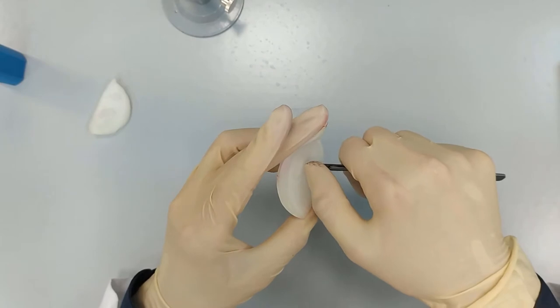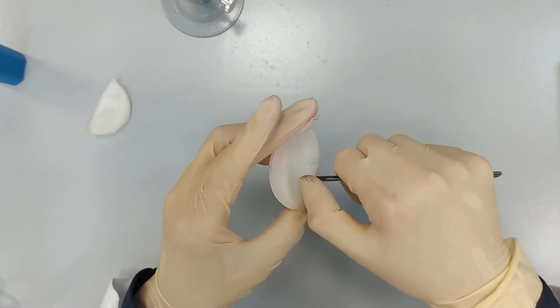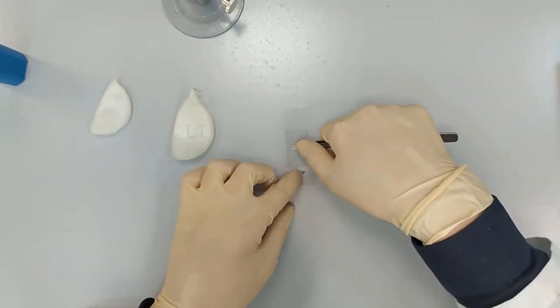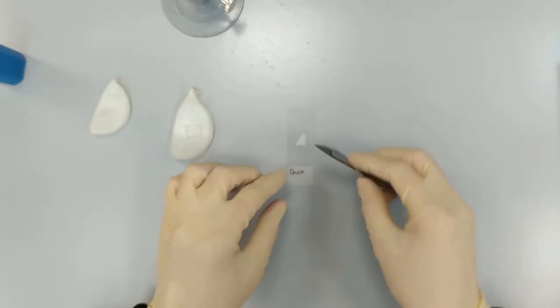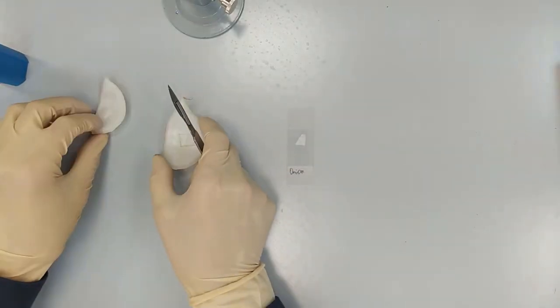So now you have your onion cells on your slide. Then you add methylene blue.